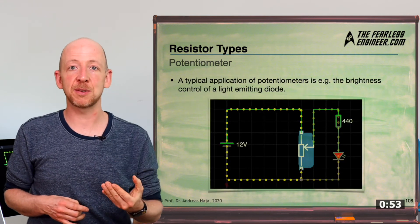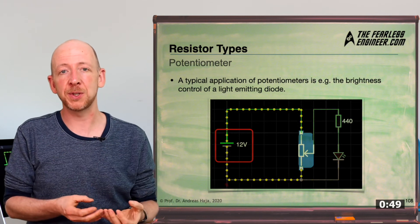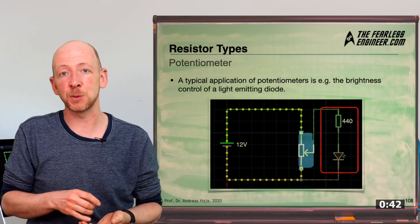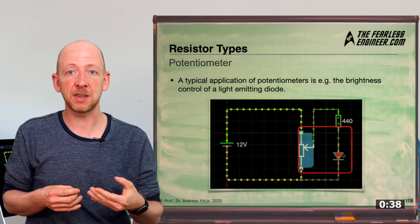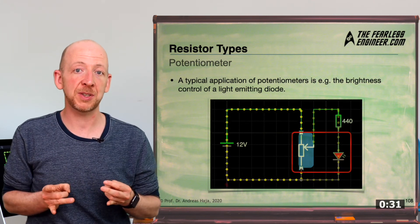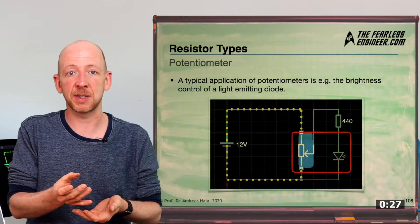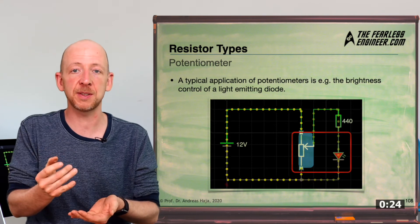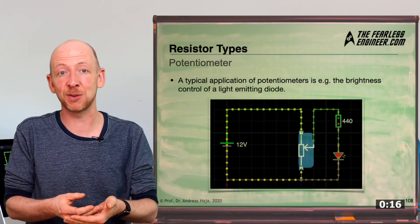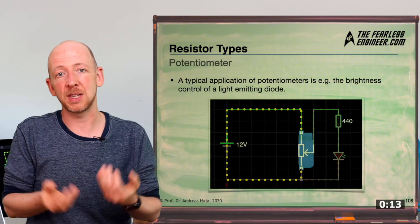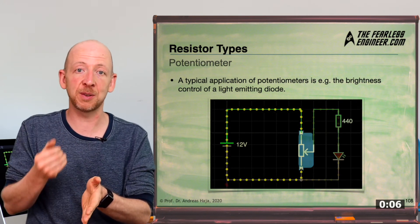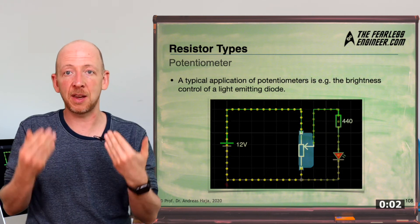Now, in the example here, you can see a brightness control for a light-emitting diode. On the left side is a 12-volt power supply, which is connected to a potentiometer. To its adjustable terminal, a branch is connected, which contains a resistor with 440 ohms, as well as a light-emitting diode, an LED. And in the animation, you can see that the brightness of the LED varies when the sliding contact changes its position. And what's really nice about the animation here is the fact that you can actually see the current as moving yellow dots. And clearly, when the resistance between ports one and two increases, the amount of current through the LED and therefore also its brightness decreases as well.